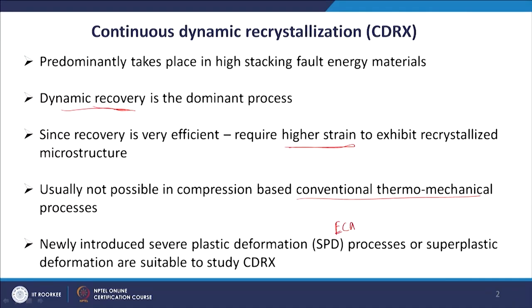But when severe plastic deformation processes came into vogue — for example, equichannel angular pressing (ECAP), high pressure torsion (HPT), or friction stir processing (FSP) — the strain in these cases is usually through a shear process. Shear strain is imposed; these are not compressive strain-based processes. Because of that you are able to impart a large amount of strain, and you are able to see the CDRx process in these severe plastic deformation processes.